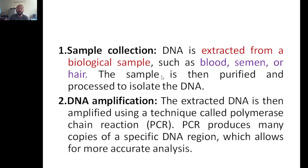For sample collection — as I mentioned — if you are at a crime scene and you find a hair sample or blood sample, you take that sample and extract DNA from it. That DNA should be pure and free from contaminants. Isolating the DNA is the first step. The second step is amplification — you need to amplify the DNA because you may have very little of it.